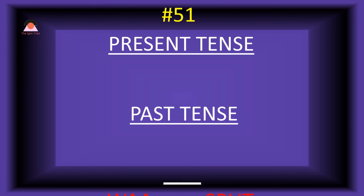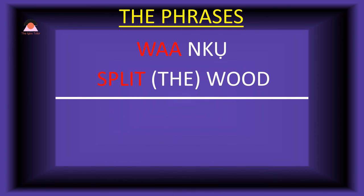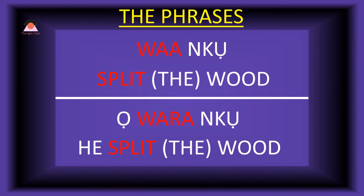Word number fifty-one: 'wa,' meaning 'split.' The past tense of wa is 'wara,' also meaning 'split' — same for both tenses. Present tense phrase: 'wa anko' — split wood. Past tense: 'o-wara anko' — he split the wood.